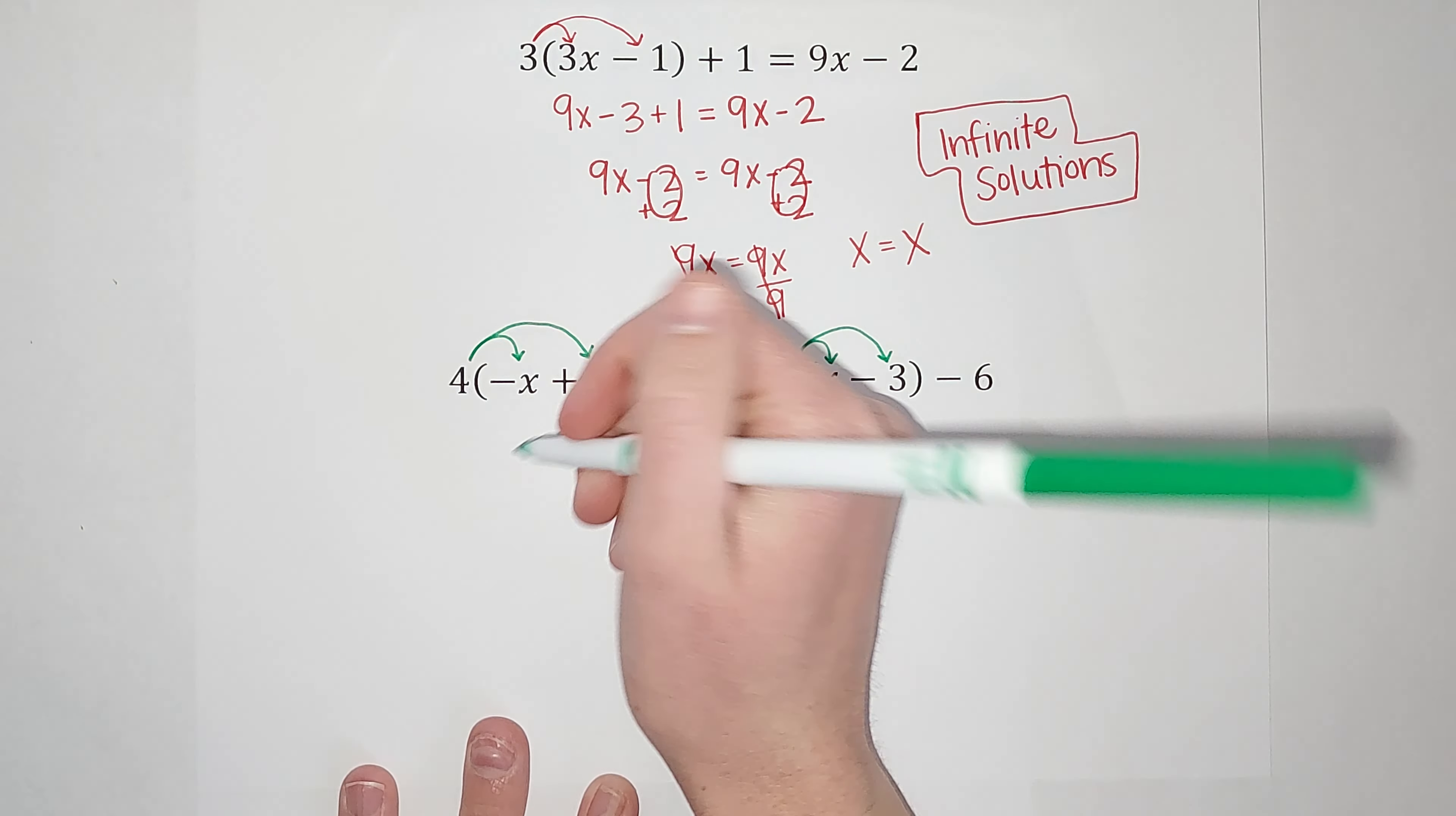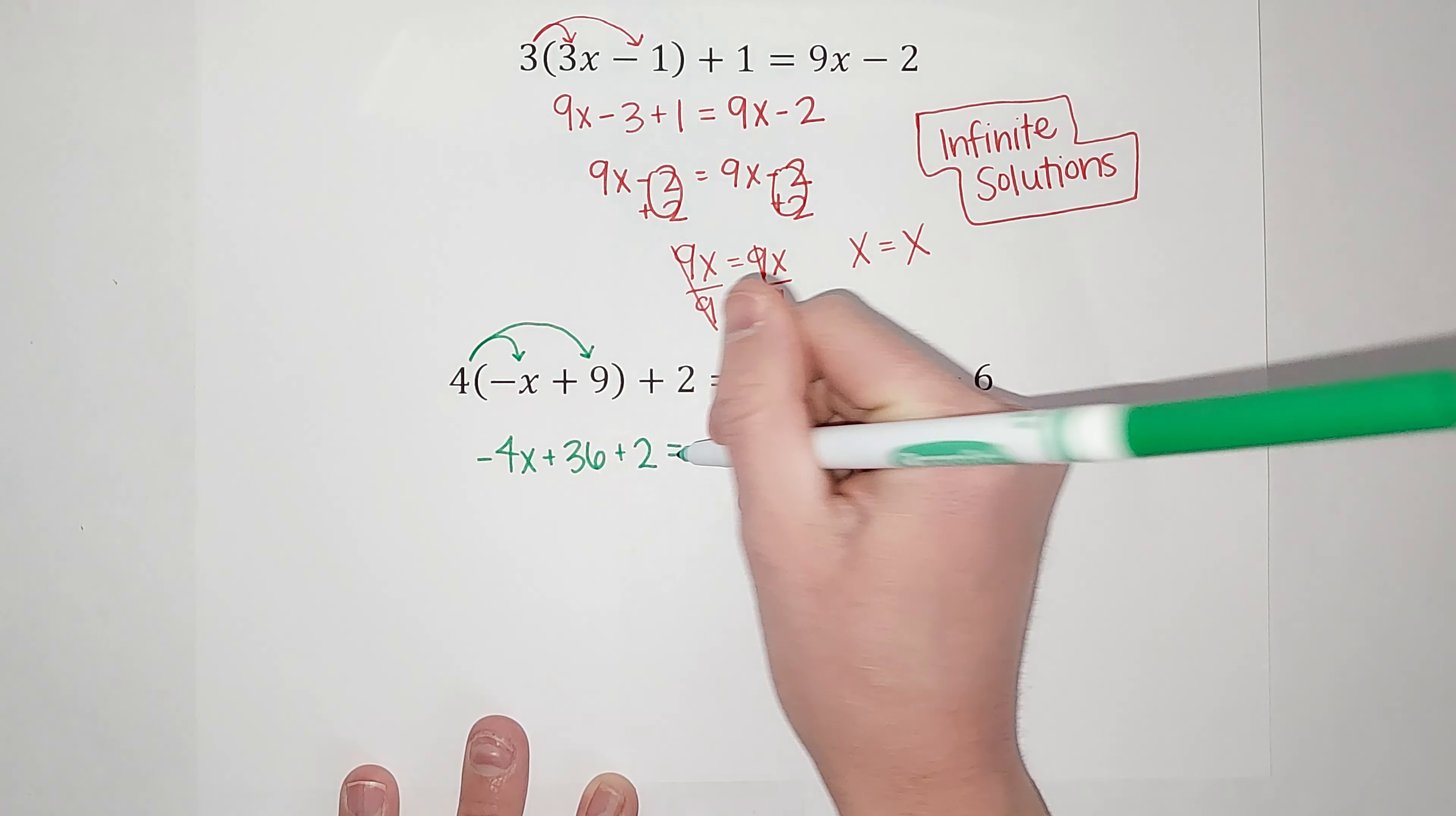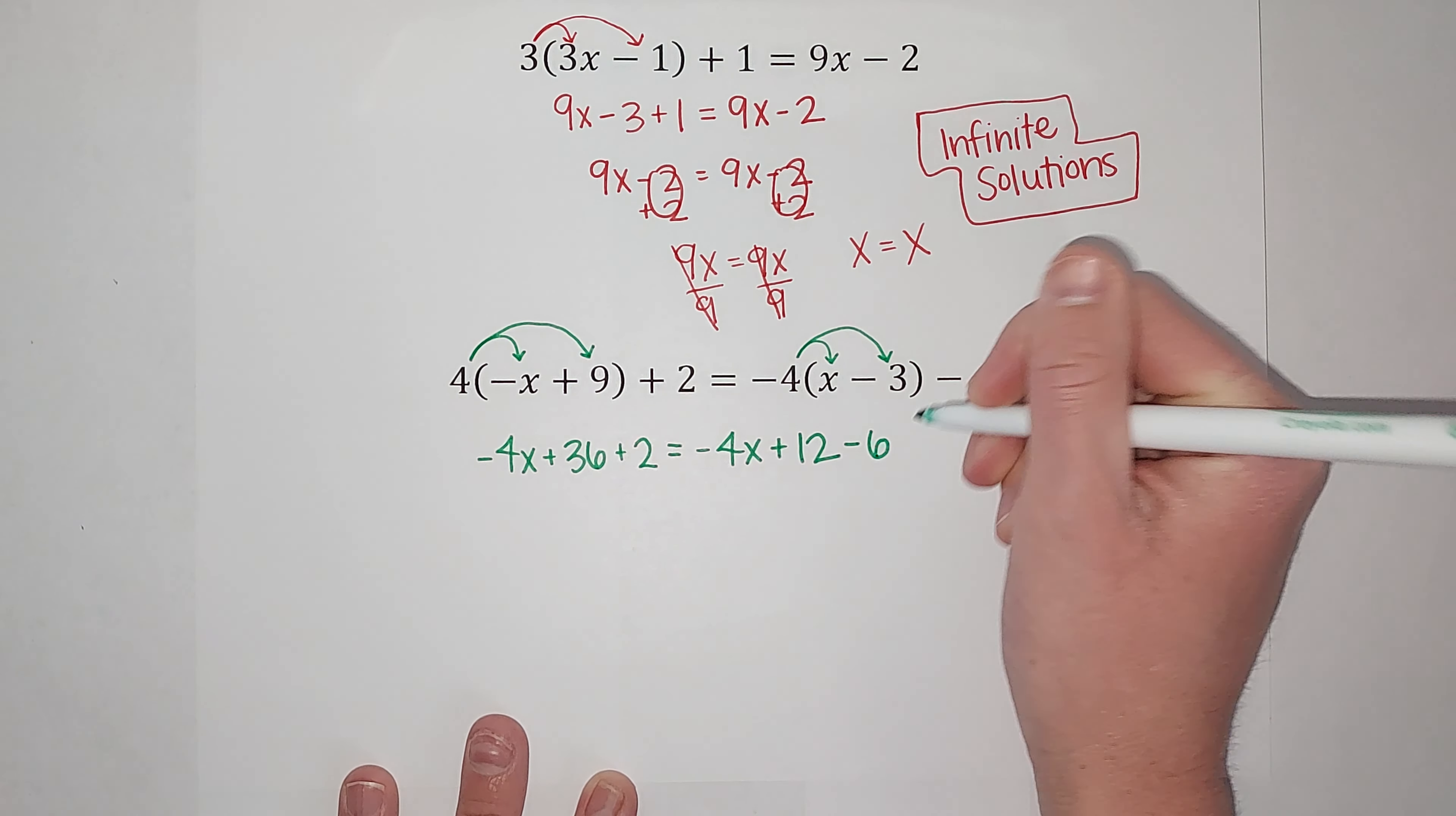4 times negative x gives me negative 4x. 4 times 9 gives me 36. So that's that distributive multiplied. And then we still have the plus 2 on the back. Equals, we're distributing this guy, negative 4 times x gives me negative 4x. Negative 4 times negative 3 gives me a positive 12.